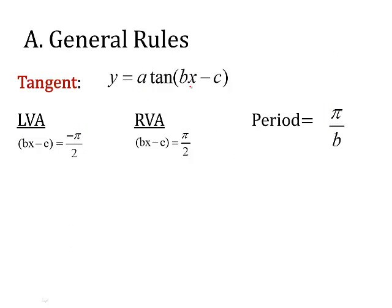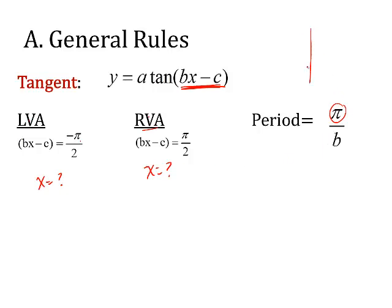Here's your basic equation for tangent — it looks a lot like sine and cosine. But tangent has a left vertical asymptote and a right vertical asymptote, which makes graphing transformations a little different. The bx minus c part of the equation affects your asymptotes — you set it equal to the left asymptote and the right asymptote and solve to find the new x. To find the period, you take π and divide it by b, the coefficient of x.